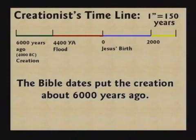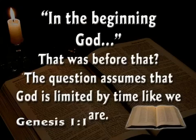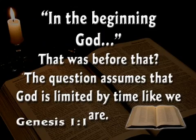Skeptics will say, what did God do for billions of years before the creation? That question assumes God is stuck in time like we are. We are limited by time — we can't go ahead or backward. But God is not limited by time. The question 'what did God do before the creation' assumes there was a 'before the creation.' God invented time, space, and matter in Genesis 1:1. There was no time before the creation. It's probably impossible for the human brain to understand that.